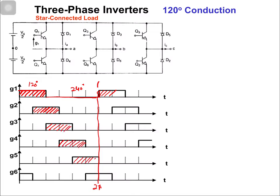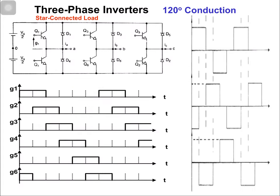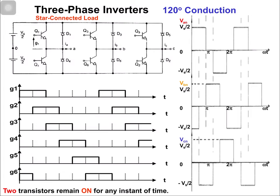All gate voltages are available only for 120 degrees, meaning the duty cycle has been reduced. In 180 degree conduction the duty cycle was 50 percent, but here it is 33.33 percent — the switch is on for one third of the time. The gating signals are now changed with respect to 180 degree conduction, and now let's sketch the output voltage waveforms.